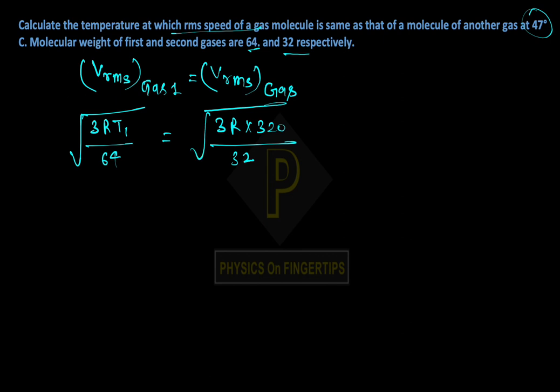we get T1/64 = 320/32, which can be written as 10. So T1 equals 640 Kelvin.